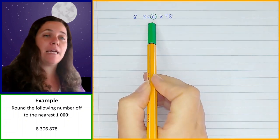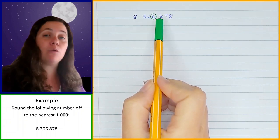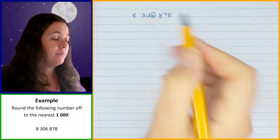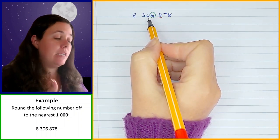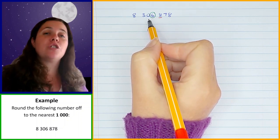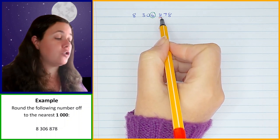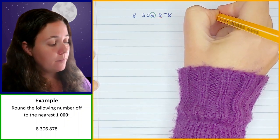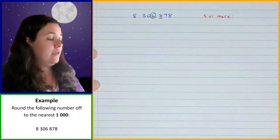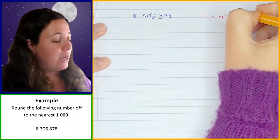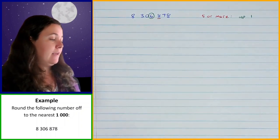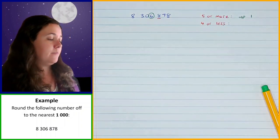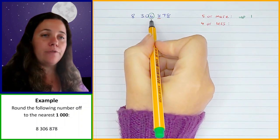In order to know what to do to that digit, I need to find the digit that will tell me what to do to it — that is the next digit, the digit straight after the 6, which is the 8. When rounding off, you first identify the digit in the position you're rounding off to, then look at the digit straight after it. If that digit is 5 or more, this digit goes up 1. If it is 4 or less, that digit stays the same.